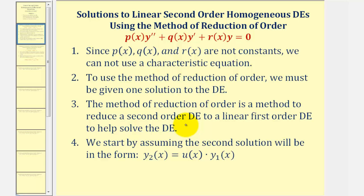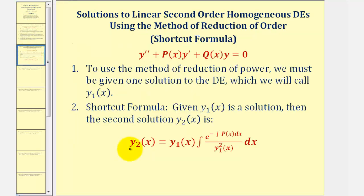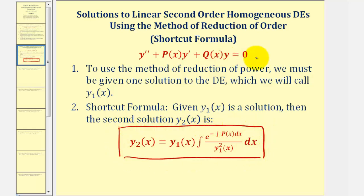The way this works is that we assume the second solution will be in the form y sub two of x equals u of x — some function of x — times y one of x, where y one of x is the given solution. There is also a shortcut formula we can use to find y sub two of x if the differential equation is in standard form, and we'll take a look at that shortcut method in the next lesson.